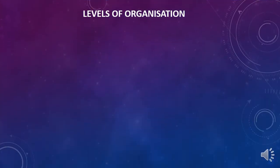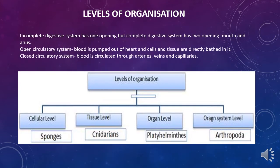Coming to levels of organization: cellular level, tissue level, organ level, and organ system level. At the cellular level, they are classified into phylum Porifera, which includes the sponges. The body shows division of labor among cells, and cells are remarkably independent and can change their form and function. The body consists of many cells arranged loosely in cell aggregates, but the cells do not form tissues — each cell is functionally active independently.